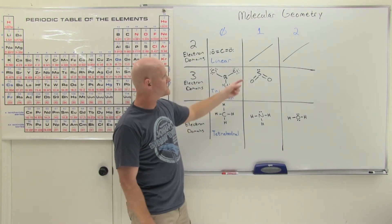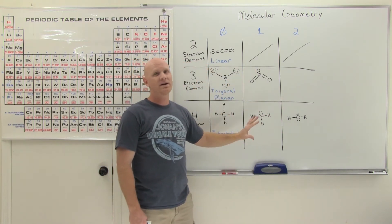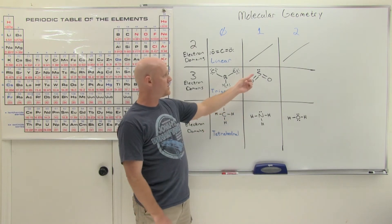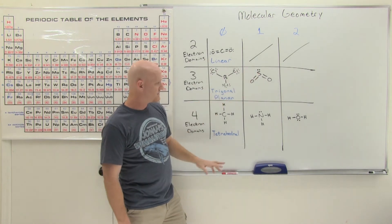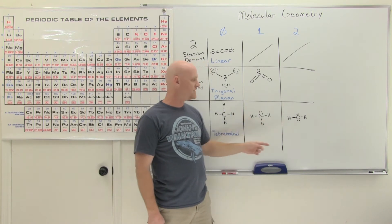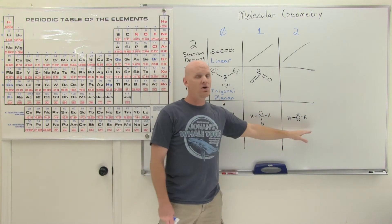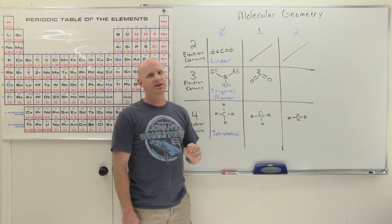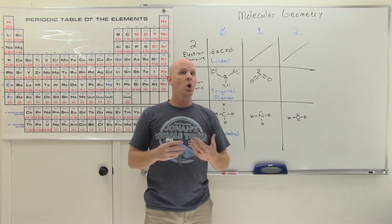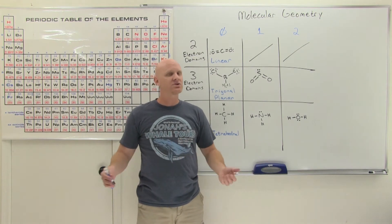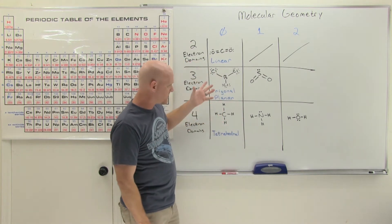The key difference comes when the central atom has lone pairs of electrons. The electron domain geometry still has the same name — three total domains is still trigonal planar, four total domains is still tetrahedral — but the molecular geometry gets a new name. When determining molecular geometry, we only look at the atoms; lone pairs are effectively invisible in this context.